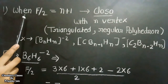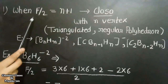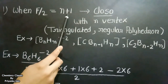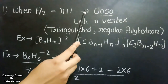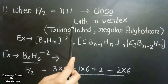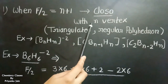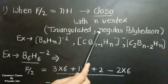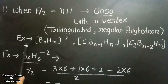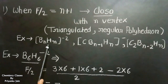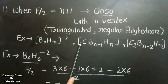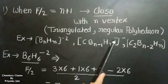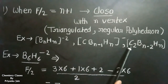When the number of electron pairs — F/2 — equals N plus 1, then the compound will be closo, meaning it has N vertices and a regular triangulated polyhedron structure. Examples of such clusters are BₙHₙ²⁻, CBₙ₋₁Hₙ⁻, and C₂Bₙ₋₂Hₙ.